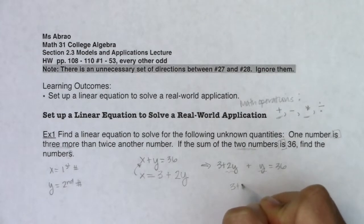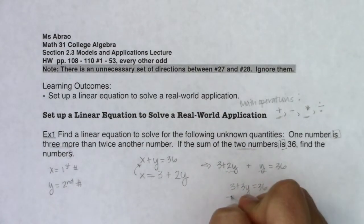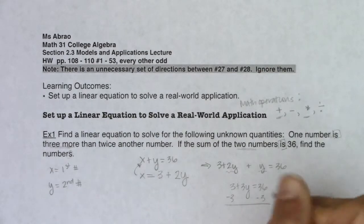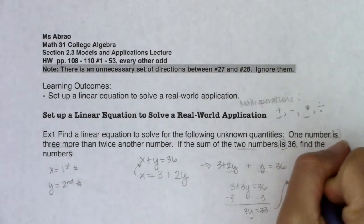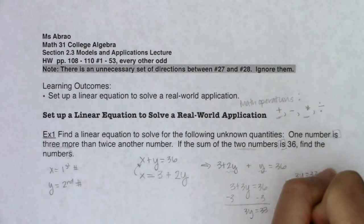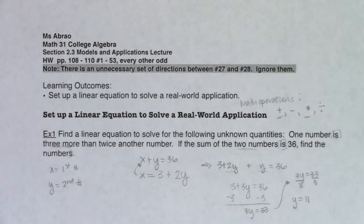I'll go ahead and subtract 3 from both sides, and when I simplify that I'm going to get 3y is equal to 33. Let me move that over here. I'm going to have 3y equaling 33. Divide both sides by 3, y will equal 11.